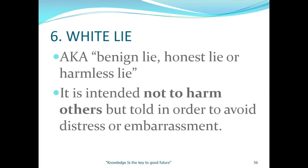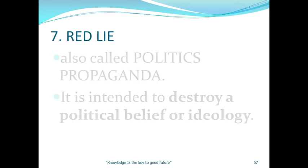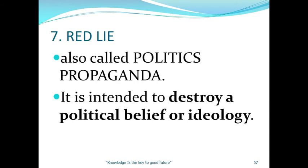A white lie is an honest or harmless lie. It is intended not to harm others, but is told in order to avoid distress or embarrassment. A red lie is also called political propaganda — it is intended to destroy a political belief or ideology. Those who commonly use it include communist groups like the NPA, who use it to destroy the political beliefs of the youth and gain their sympathy.